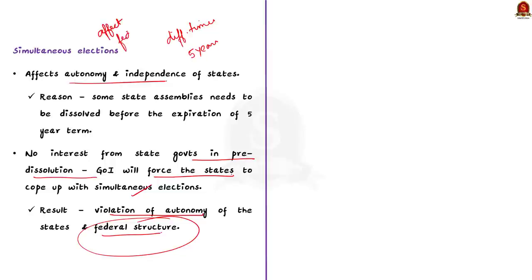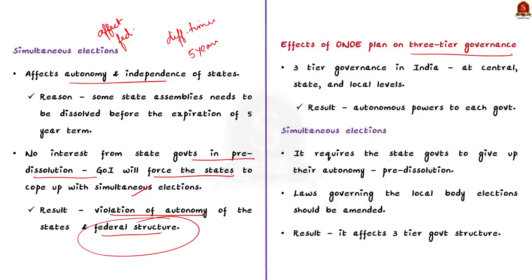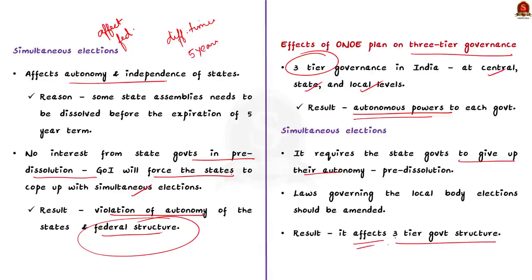Apart from violating federalism, this plan will also affect the three-tier governance in the country. In India, we have three different levels of government — central level, state level and local level — each with certain autonomous powers. Conducting simultaneous elections would require state governments to give up their autonomy. Apart from this, the laws governing local body elections need to be changed to align with the new election cycle. These actions could defeat the three-tier governance in our country, as simultaneous elections require state and local governments to give up their autonomy.